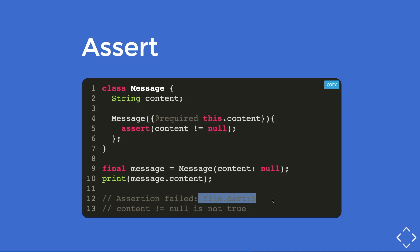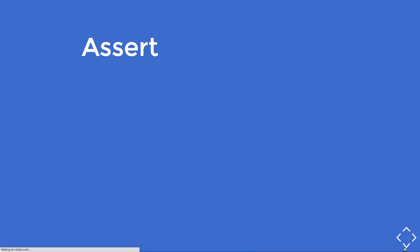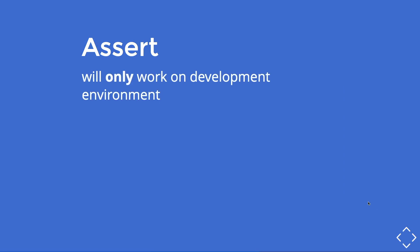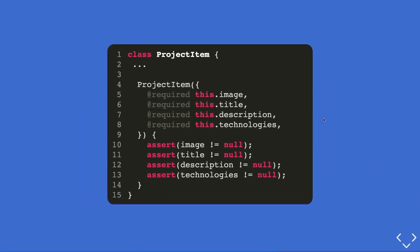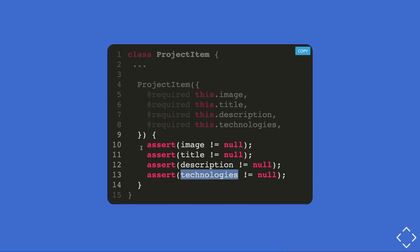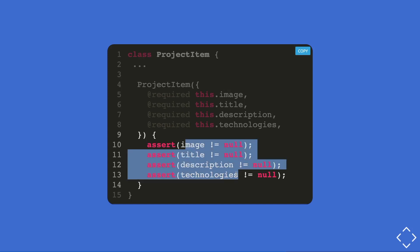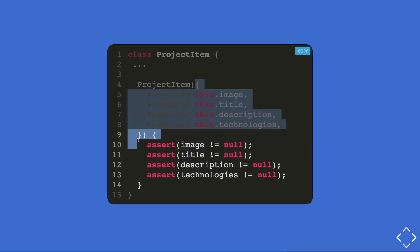One important thing: assertion only works in the development environment — it does not work in production or release mode. Assertion is a great gateway to catch null cases or anything that might break your app during development. You then add assertions for all properties — image, title, description, and technologies — inside your ProjectItem class.